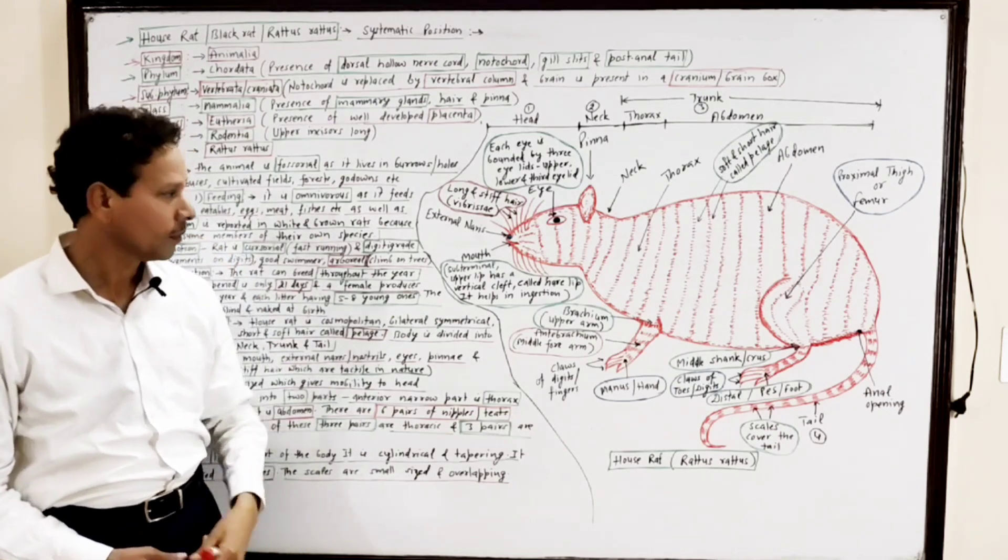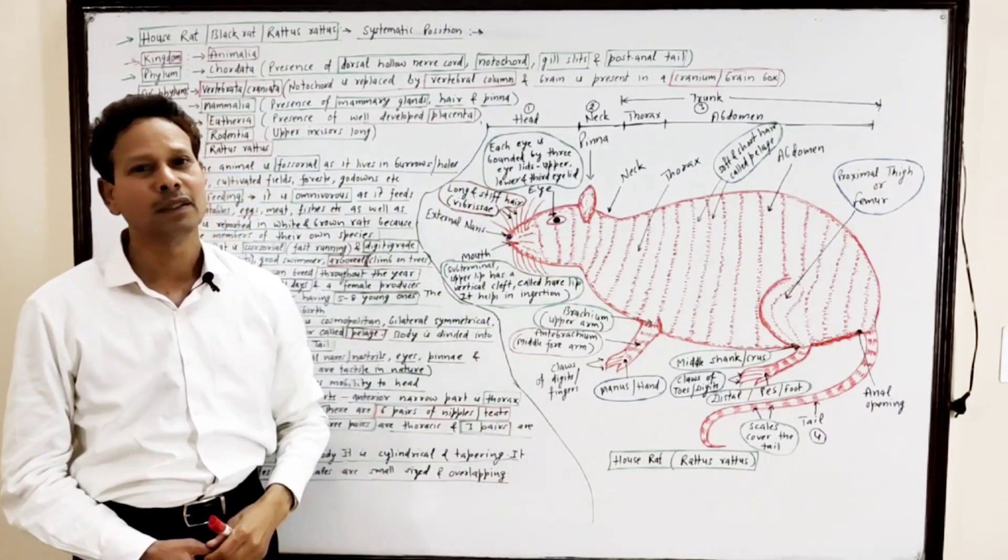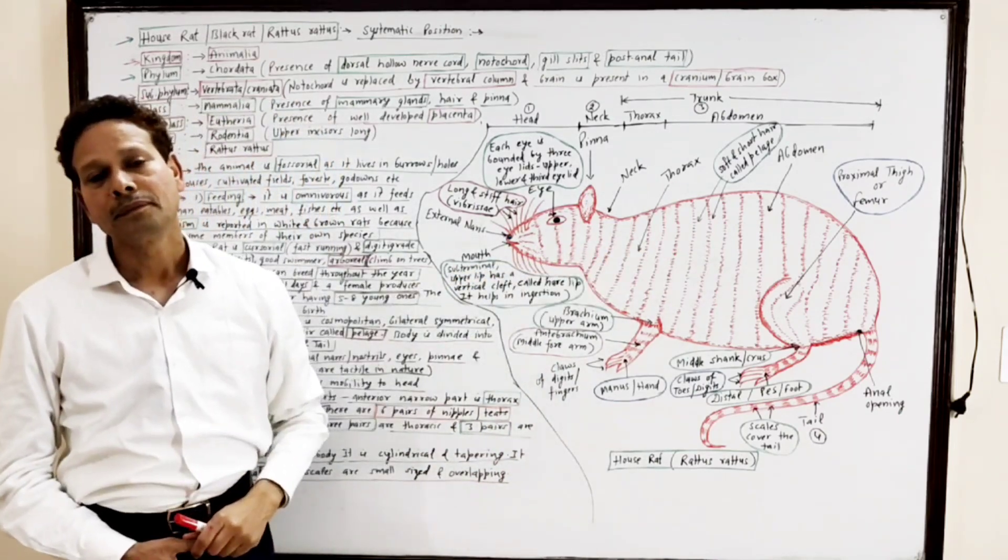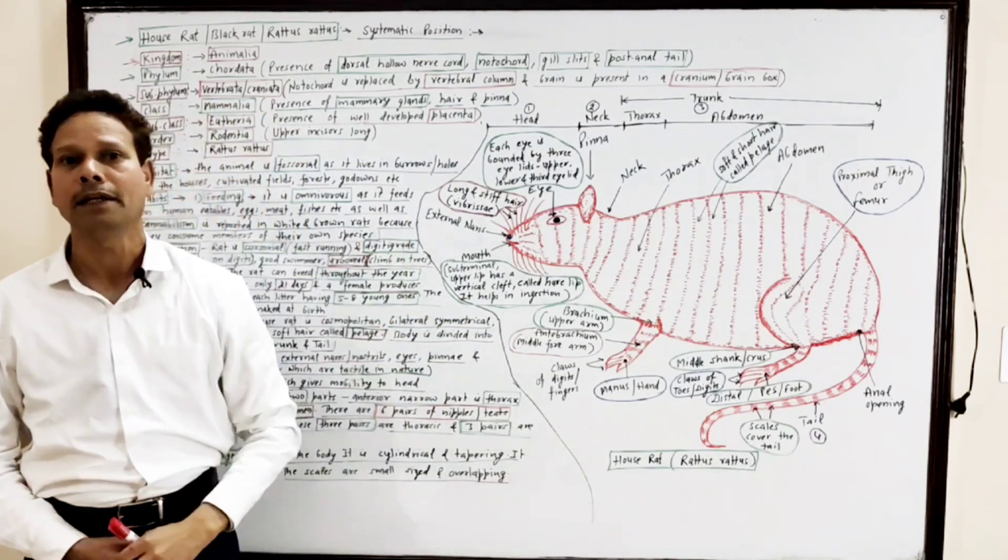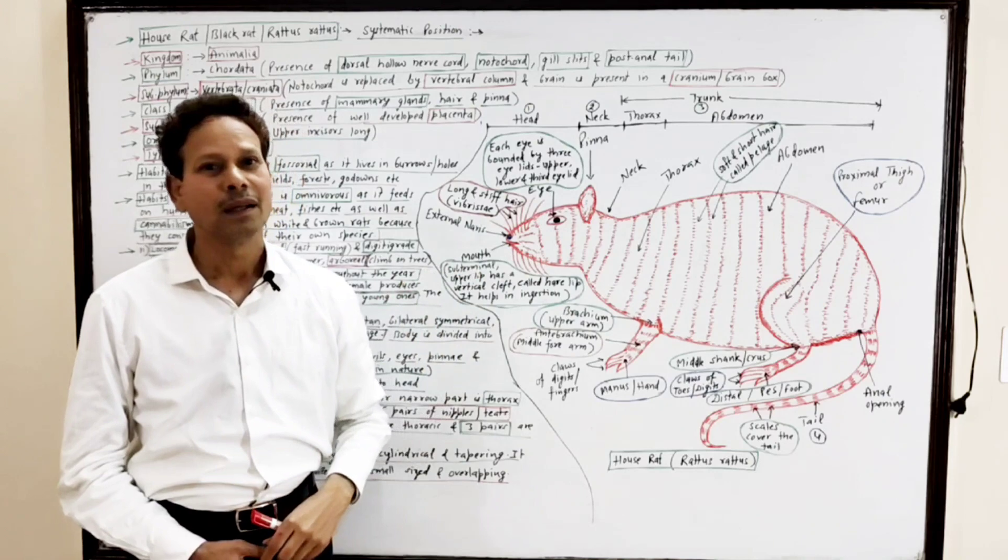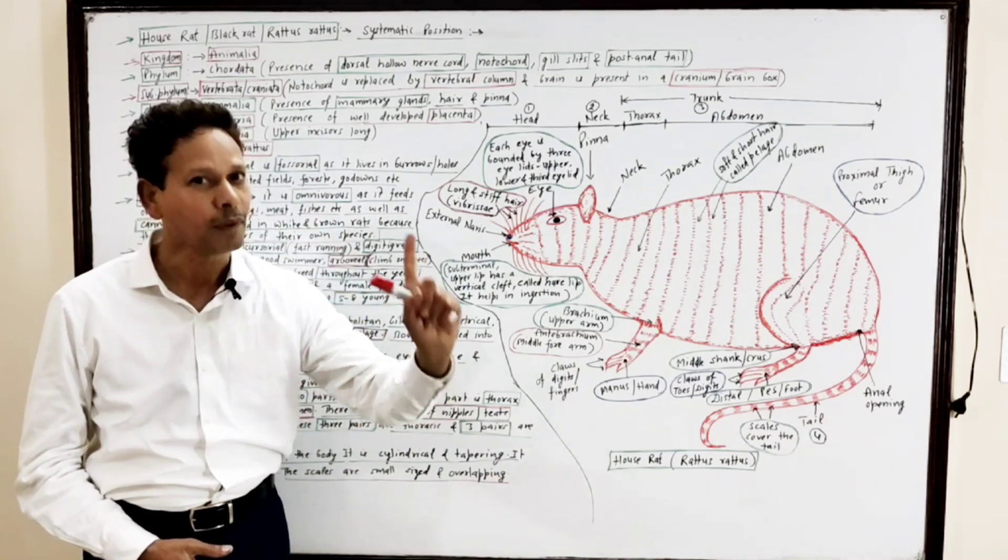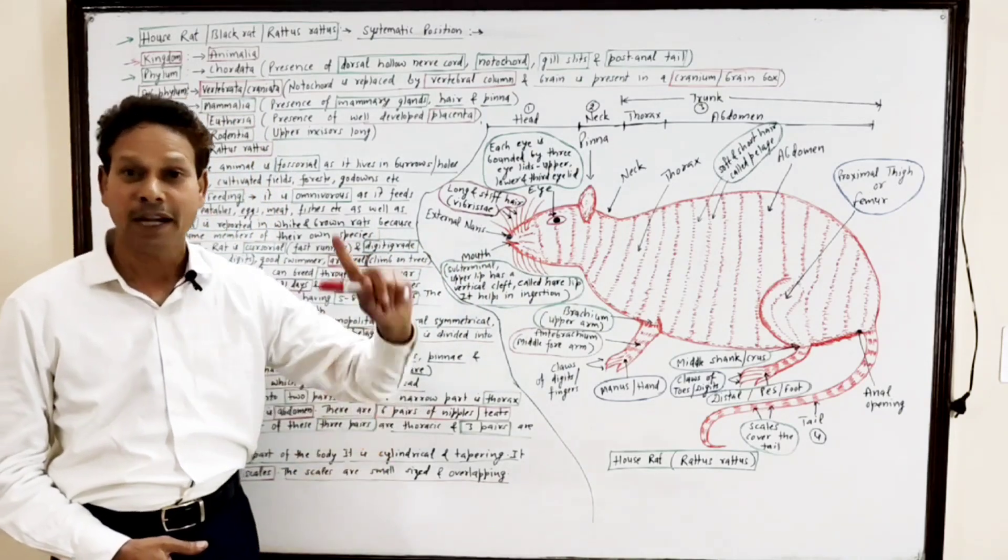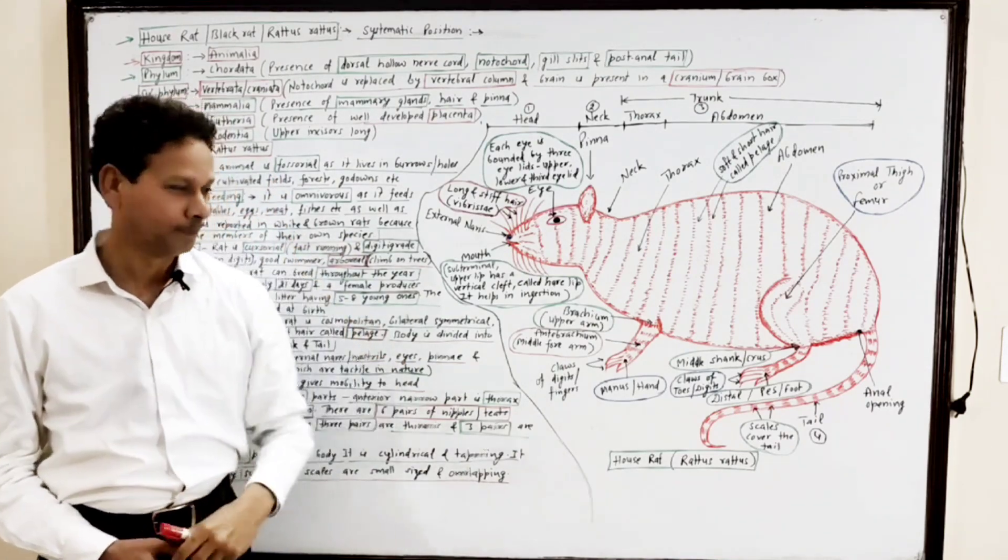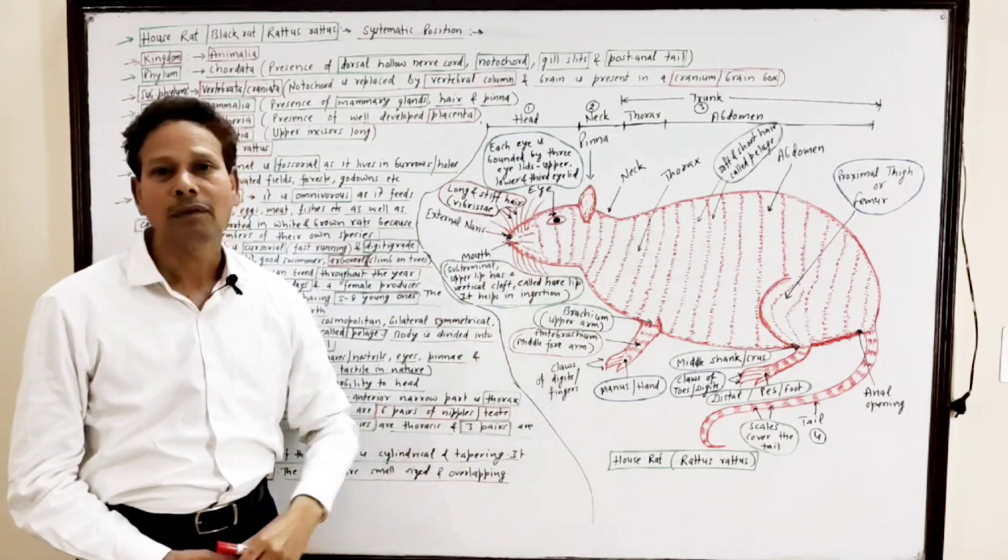Reproduction: The animal breeds throughout the year. The gestation period, the pregnancy period, is short, about three to four weeks. A mature female produces five to six litters per year, and each litter bears six to eight young ones. The young ones are blind, naked, without any fur coat or pelage.